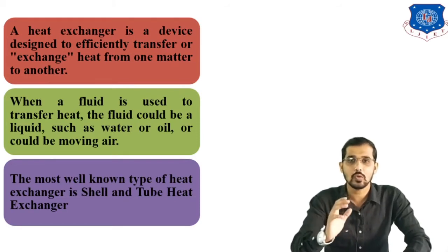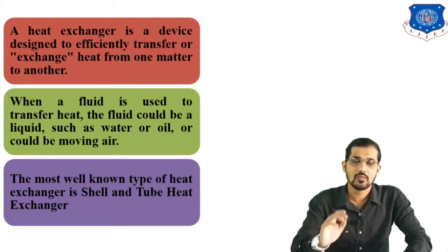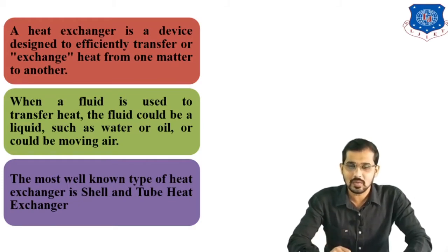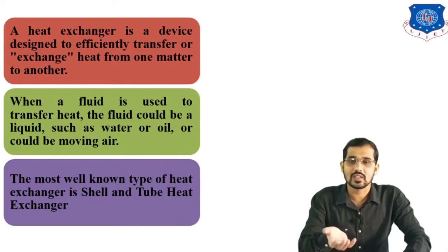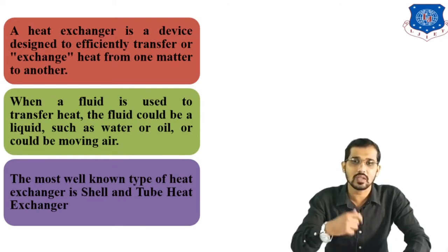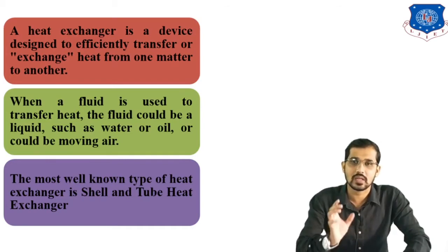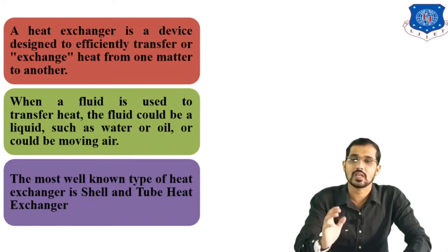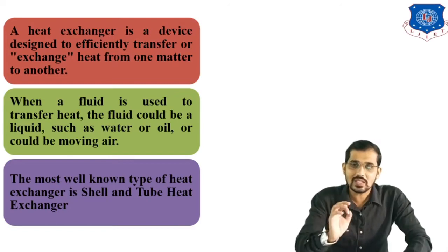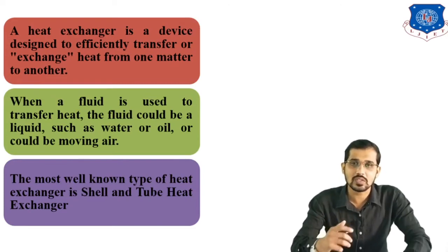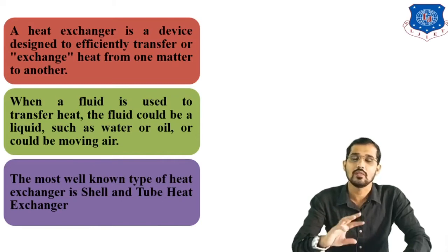For example, in a distillation column, we use two heat exchangers. The first one is a reboiler, which provides heat to the liquid stream to generate vapours. Those vapours come to the top section and transfer to the condenser. The condenser is another heat exchanger used to condense the vapour stream. These are heat exchangers used in chemical industry to exchange heat between various fluid streams.